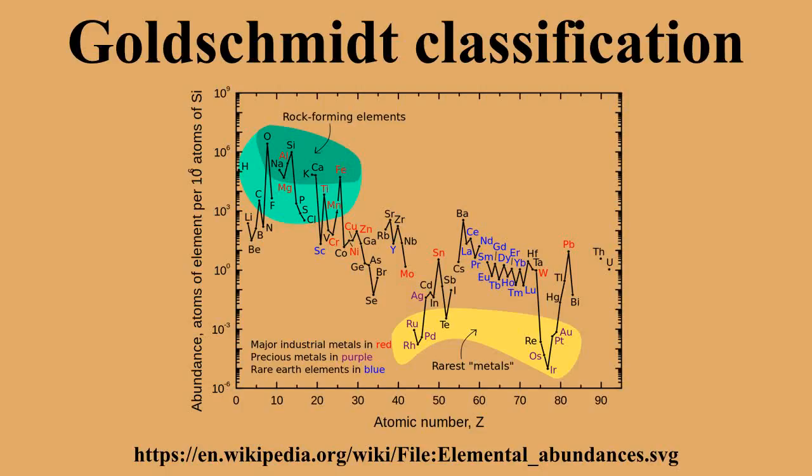Siderophile elements are the high-density transition metals which tend to sink into the core because they dissolve readily in iron either as solid solutions or in the molten state. The siderophile elements include gold, cobalt, iron, iridium, molybdenum, nickel, osmium, palladium, platinum, rhenium, rhodium, ruthenium, germanium, silver and tungsten. Manganese may also be included in the siderophile classification by some.